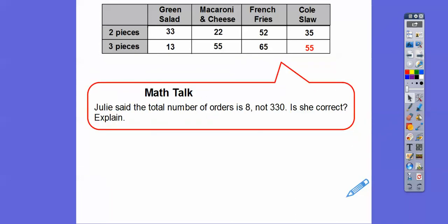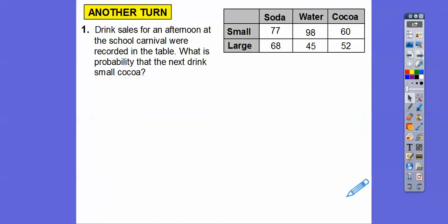Julie says that the total number of orders is 8, not 330. Is she correct? And explain. No. See, Julie, there's 8 possible choices right here, but of those 8 possible choices, there's 330 orders right there. There's 8 possible number of outcomes, but the total number of orders ended up being 330.